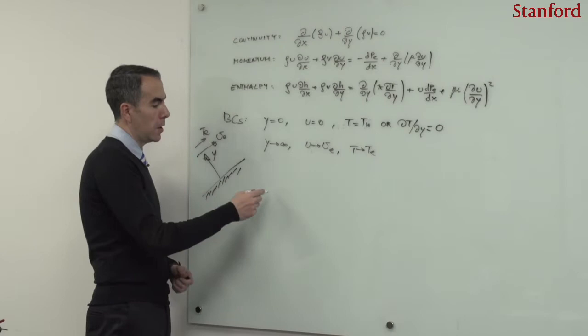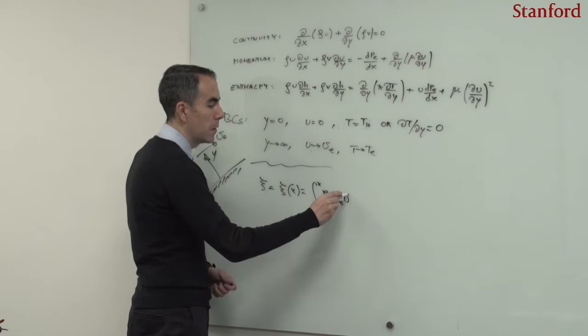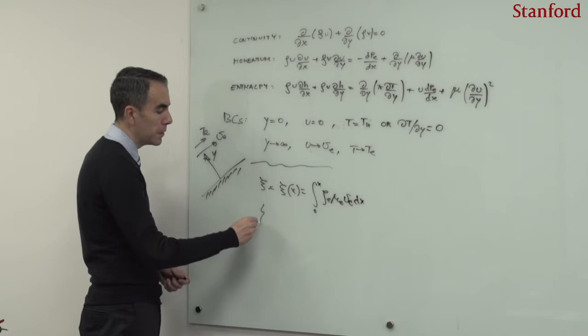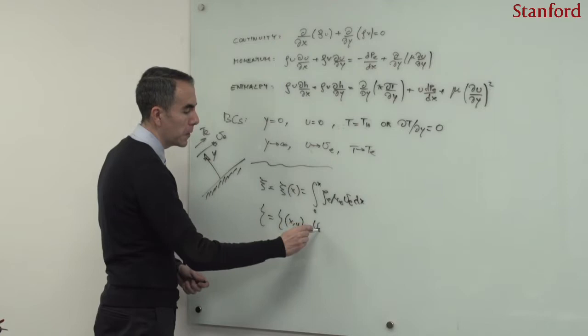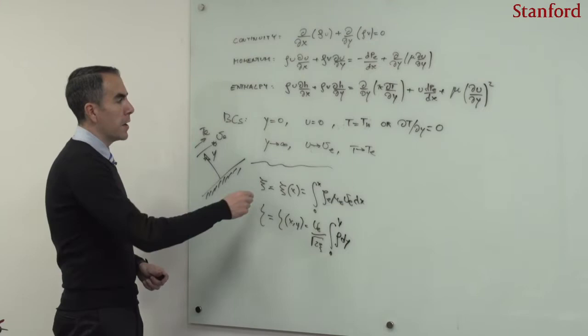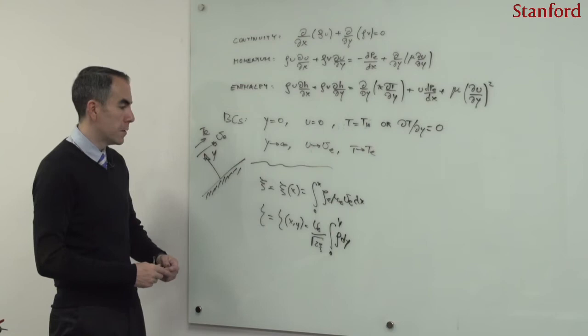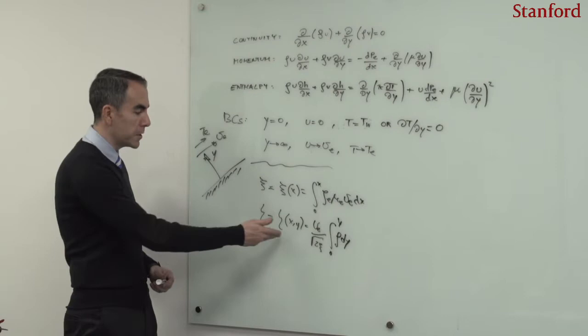Those similarity variables are, for instance, xi, which is the integral from 0 to x of rho_e times mu_e with respect to x, and eta, which is equal to u_e divided by the square root of 2*xi, multiplied by the integral from 0 to y of the density. This is a transformation similar to the Howarth-Dorodnitsyn transformation, with a density weighting of the variable eta that characterizes the wall-normal structure of a profile.